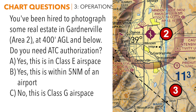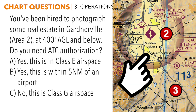This next question is one of the most missed questions on the practice test and is very similar to questions on the FAA test. You've been hired to photograph real estate in Gardnerville, area 2, at 400 feet AGL and below — do you need authorization? Go to area 2 and find Gardnerville just to the southwest. We need to figure out which type of airspace we're in. The only airspace line surrounding Gardnerville is this thick shaded magenta line, which indicates Class E airspace starting at 700 feet AGL.